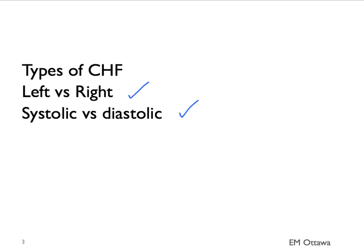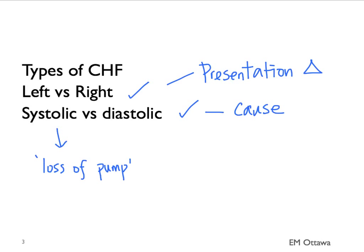Left-sided versus right-sided CHF presents differently. Systolic versus diastolic congestive heart failure is pointing to the cause. Systolic heart failure occurs when the pump is unable to pump forward. Diastolic heart failure happens when the myocardium is unable to relax or the muscles are stiff.